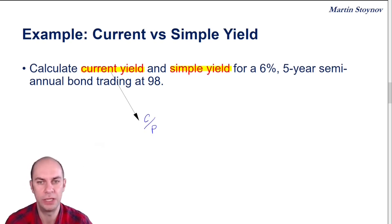Whereas the simple yield is a variation of the YTM calculation. Now, of course, for the YTM calculation, we need Excel or a financial calculator. The simple yield is essentially a quick and dirty alternative to the YTM calculation.